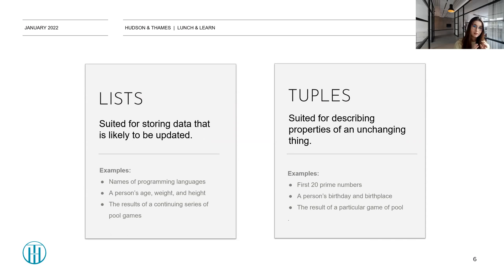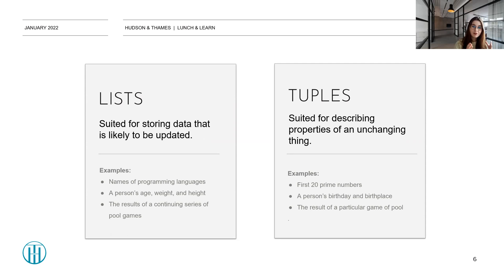Lists are suited for storing data that is likely to be updated. For example, names of programming languages, a person's age, weight, and height, or the results of a continuous series of pool games — something that is very likely to be updated, resized, or have more data added to it.